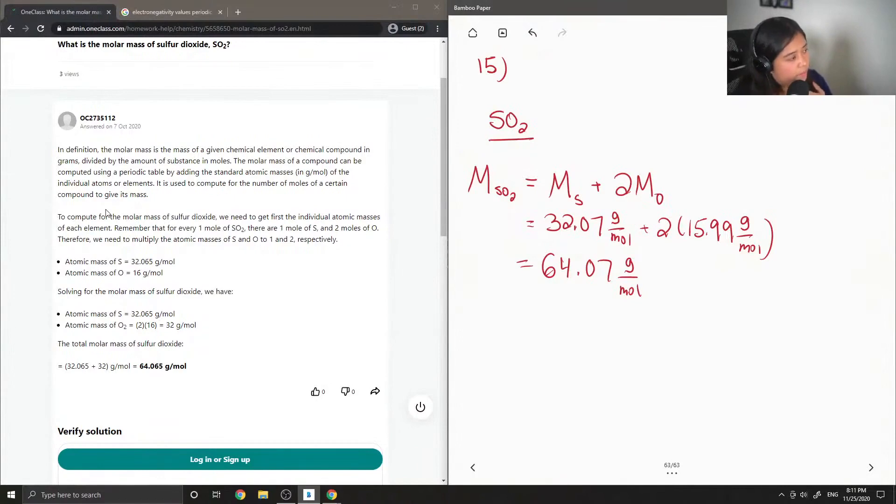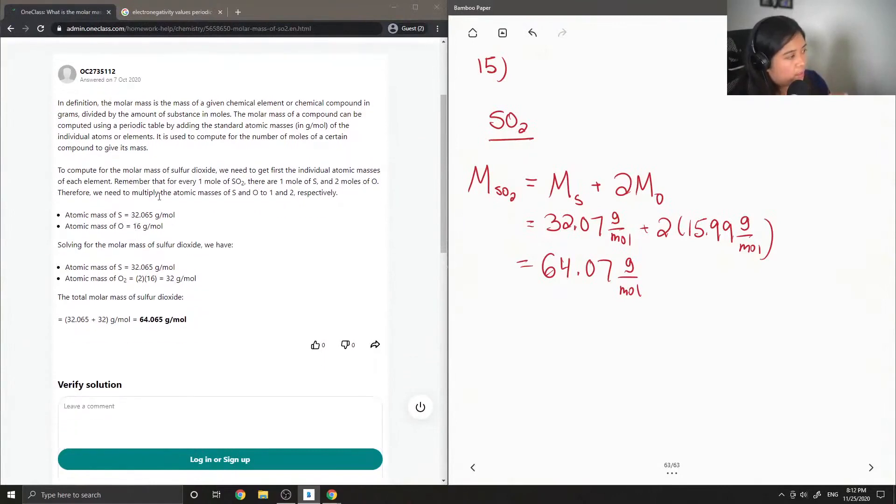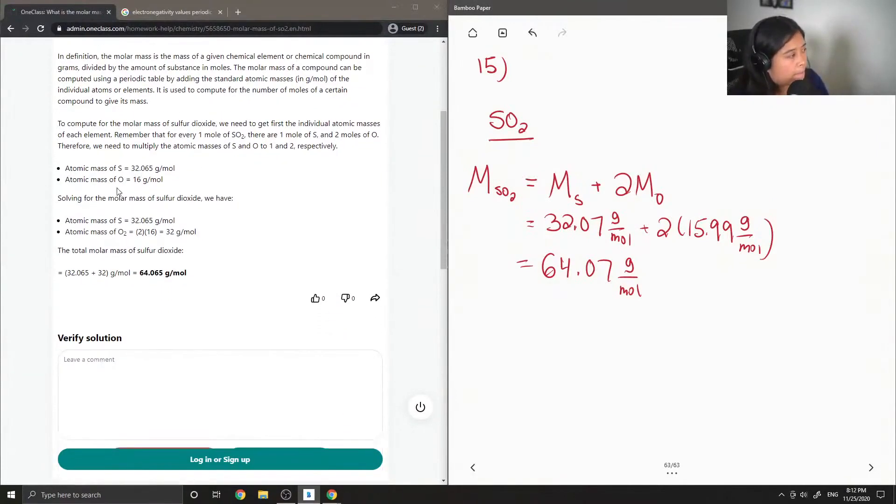It is used to compute for the number of moles of a certain compound to give its mass. To compute for the molar mass of sulfur dioxide, we need to get first the individual atomic masses of each element. Remember that for every one mole of SO2, there's one mole of sulfur, two moles of oxygen. Therefore, we need to multiply the atomic masses of sulfur and oxygen to one and two respectively. Atomic mass of sulfur is 32, atomic mass of oxygen 16.